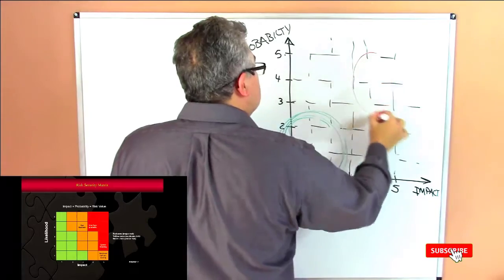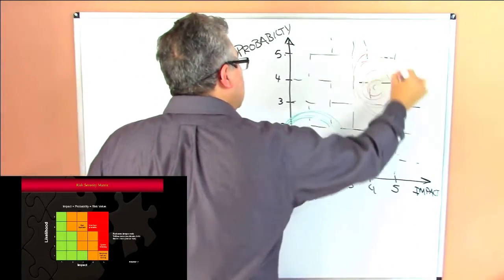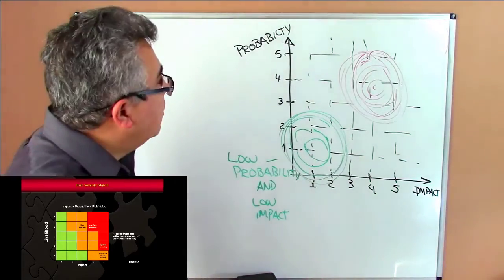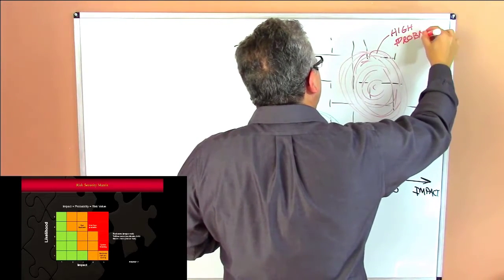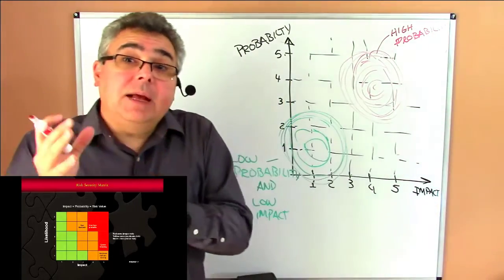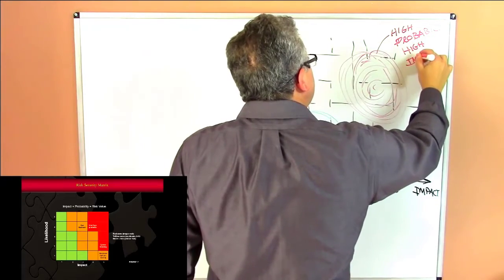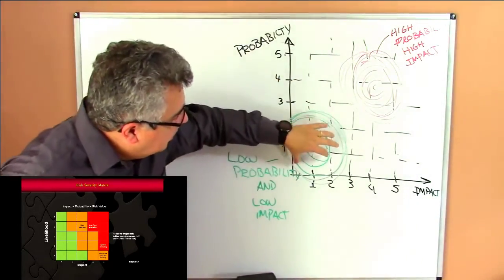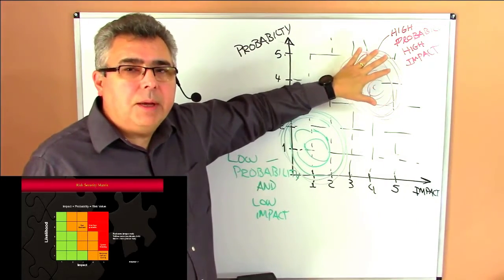On the other hand, we may have a region shaded in red in the upper right area, where we have high probability of occurring — meaning that event is more likely to occur — and if that thing that is more likely to occur actually happens, you also have a high impact. That risk matrix is an easy way to show the customer. Risks in the red area are the ones we need to focus on and pay attention to, because those are very critical.